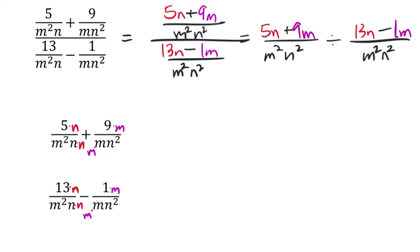Well, it's division. But we don't want this to be division. We want it to be multiplication. So let's take that first fraction, which never will flip when changing this to division, but the division to multiplication. Let's take that division and change it to multiplication by flipping that second fraction. Now it's m squared, n squared over the 13n minus 1m.